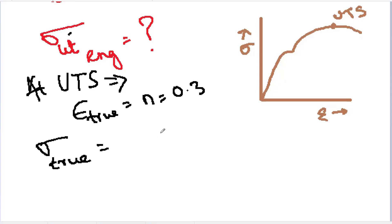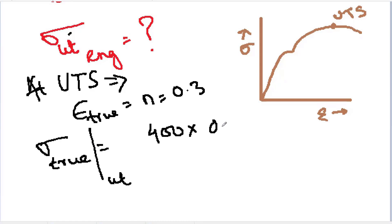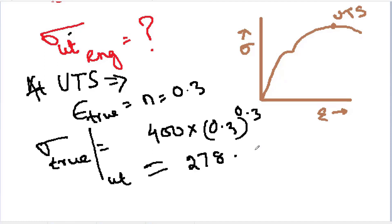So the true ultimate stress will be equal to 400 into 0.3 to the power 0.3. This value becomes 278.738 megapascal.